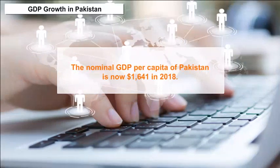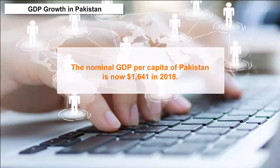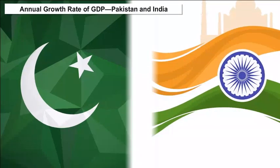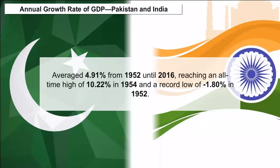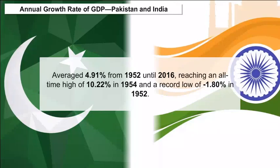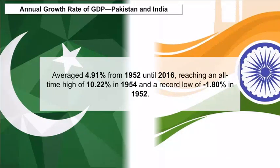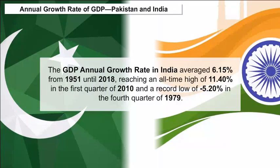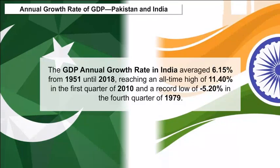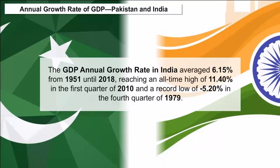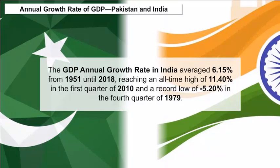The nominal GDP per capita of Pakistan is $1,641 in 2018. GDP growth rate in Pakistan averaged 4.91% from 1952 until 2016, reaching an all-time high of 10.22% in 1954 and a record low of minus 1.80% in 1952. The GDP annual growth rate in India averaged 6.15% from 1951 until 2018, reaching an all-time high of 11.40% in the first quarter of 2010 and a record low of minus 5.20% in the fourth quarter of 1979.